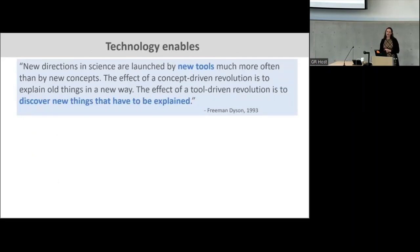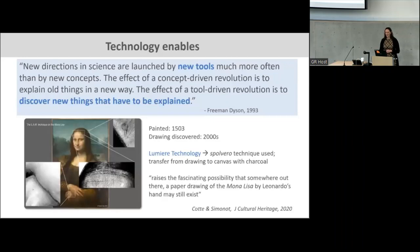This leads us to ask new questions — in our case, new questions about proteins that exist in the heart that we didn't know about before. We can think of it like the Lumiere technology and what that did for revealing new knowledge about the Mona Lisa. The Mona Lisa is more than 500 years old, but not until very recently did we discover that it was created based on first a sketch, transferred to canvas with charcoal, which now reveals the possibility that somewhere out there there might be a pencil sketch of the Mona Lisa from Leonardo.